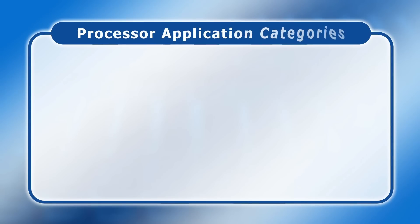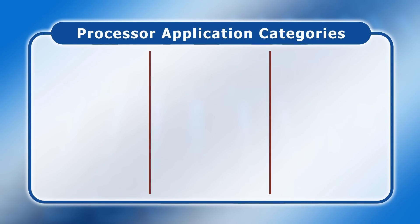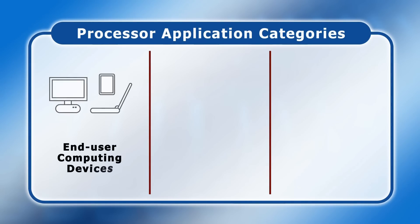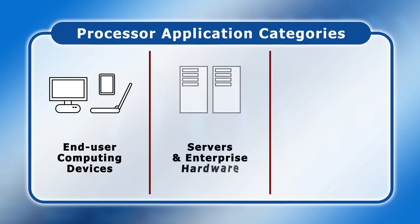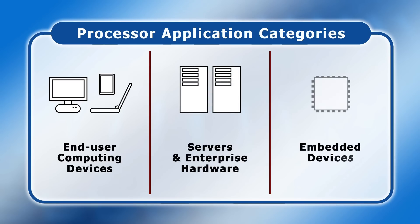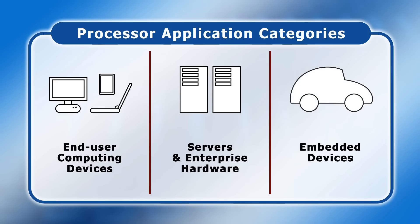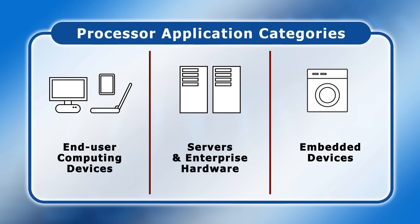Today, there are three main areas of computer processor application. Firstly, processors are used to run software on end-user devices such as PCs, phones and laptops. Secondly, they power servers and other enterprise computing hardware. And finally, they're used in embedded devices. For example, today, processor cores are embedded in cars and in many electrical and electronic products. Many computer components also have an embedded processor, with all SSDs and hard drives requiring a processor in their controller.